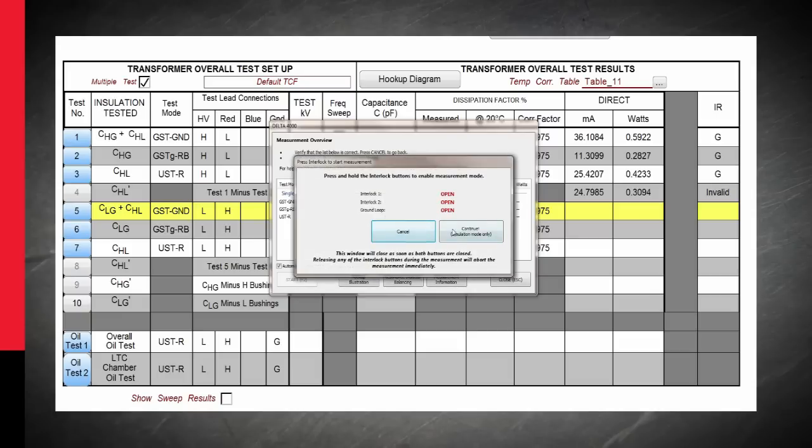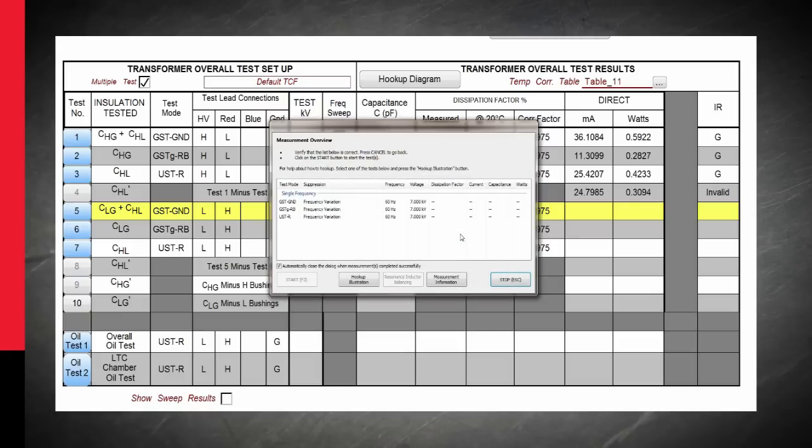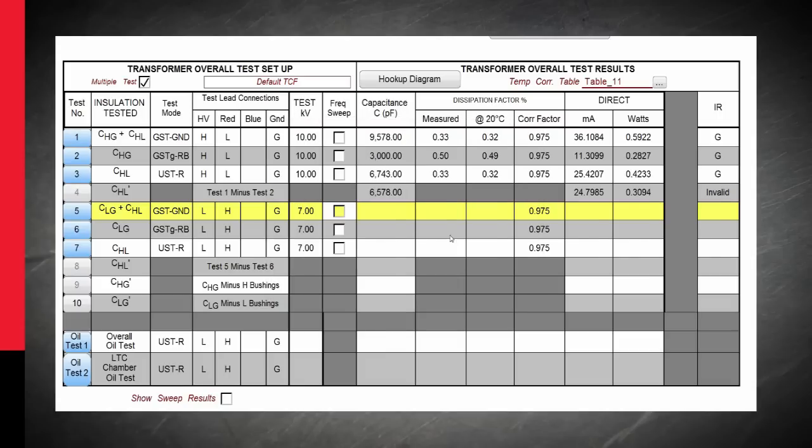Once prompted, we close interlocks at appropriate time and test voltage is once again applied to transformer. We can observe the results as they are completed on the dialog box. Once we see the results are as expected, we can confirm good insulation condition of the main body of the transformer.